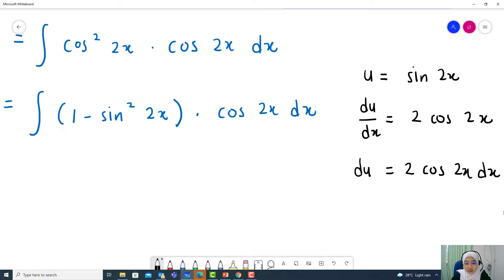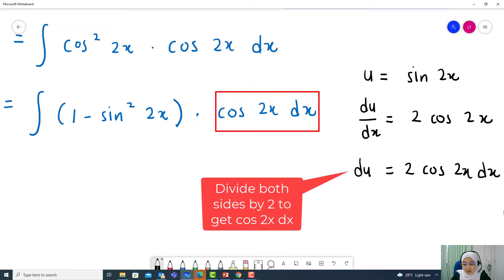So before we substitute u, here is cos 2x dx. So divide both sides by 2 to get cos 2x dx. So du divided by 2 equal to cos 2x dx.